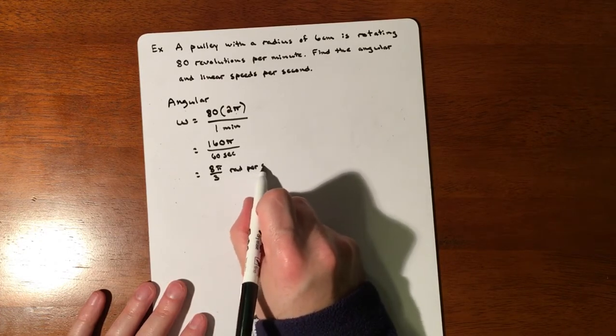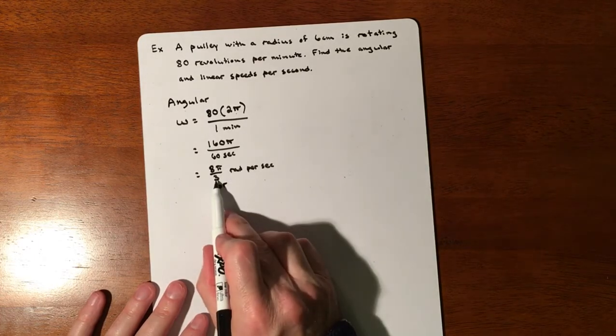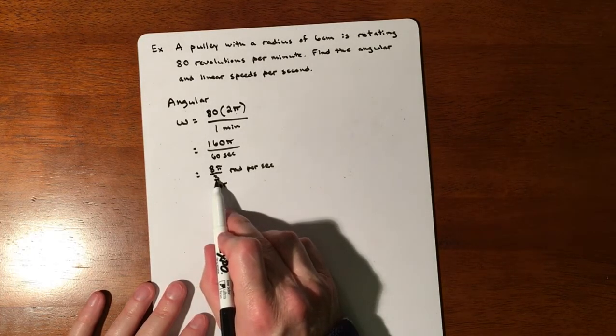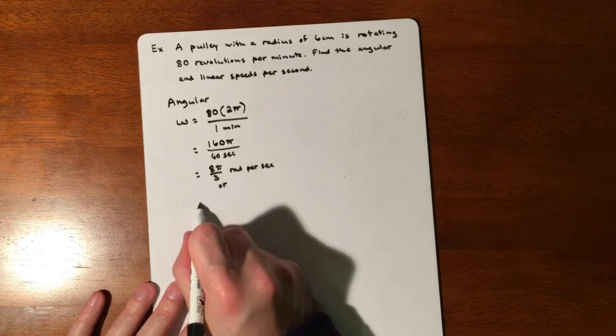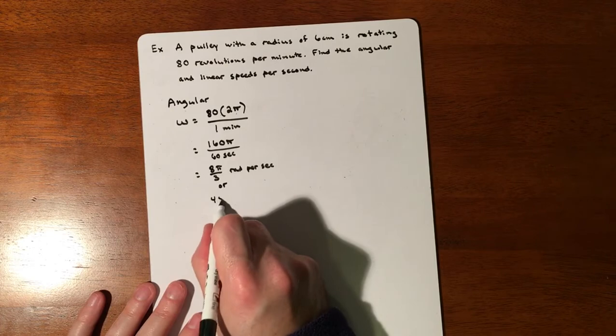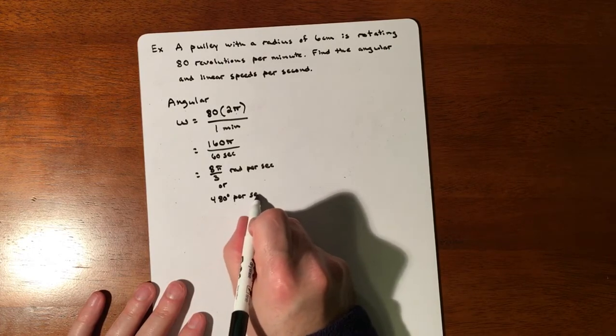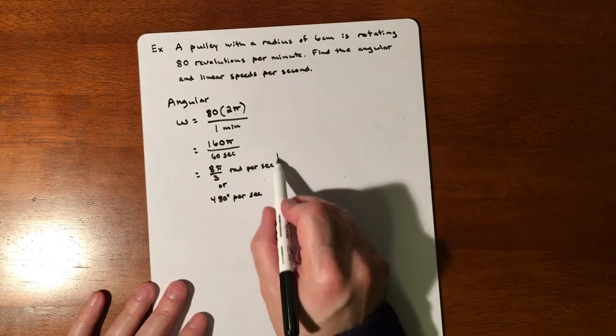Anything over 3 is a 60-degree reference angle, so you're looking at 8 times 60, which makes 480 degrees per second, just depends on what you're looking for. That's your angular speed.